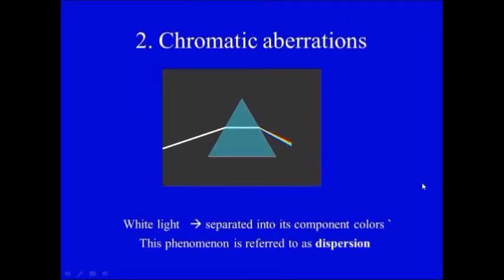The second type of aberration is chromatic aberration. If rays passes through a prism, it will be analyzed to the primary colors of light, and this phenomenon is known as dispersion.